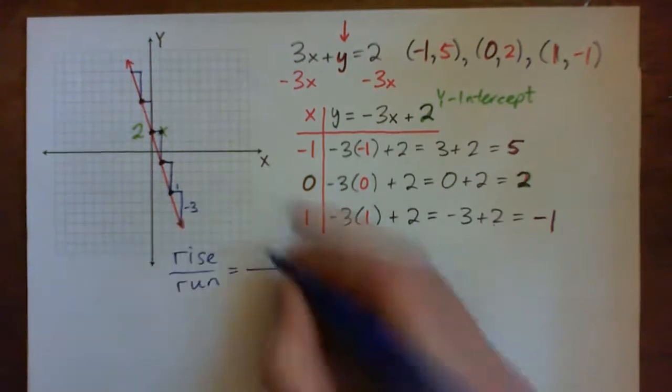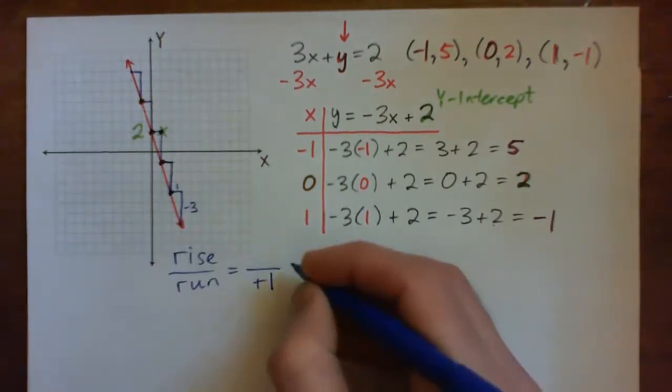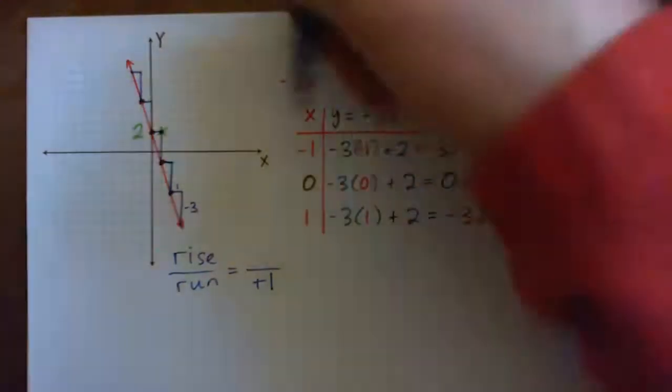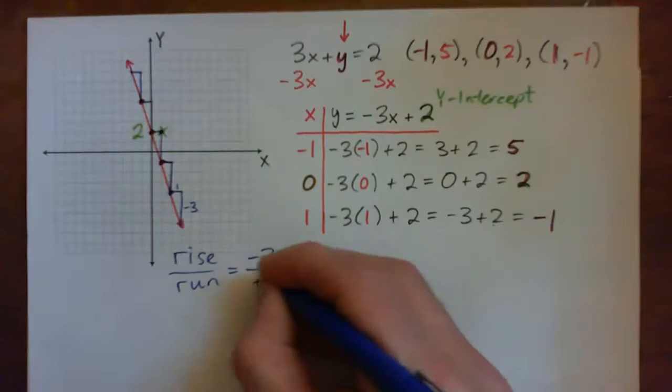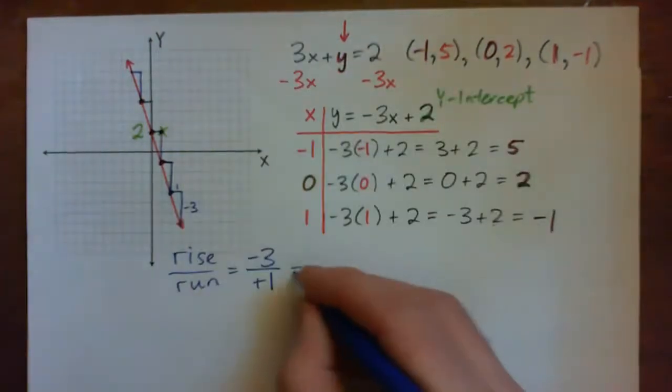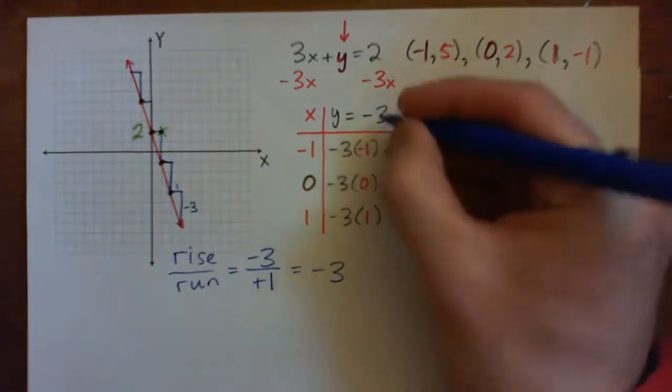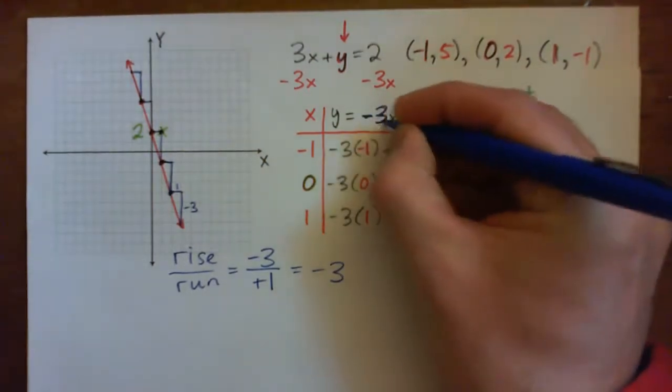So, see how I was running across 1? And every time I did that, I rise. My rise, well, I didn't rise. I guess I fell. So, my rise was negative 3. So, I went down 3. And negative 3 over 1 is negative 3, right? And notice that that's that number there, negative 3.